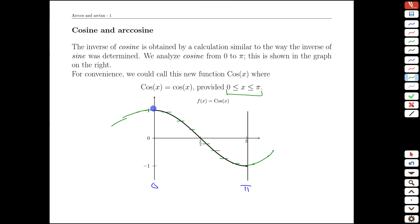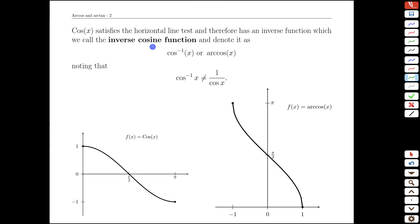So cosine, the interval that we choose is 0 to pi. Once we have defined that narrow interval for the cosine function, giving it that capital C Cos, then we can do the same thing we did with the sine function, and that is reflect it.